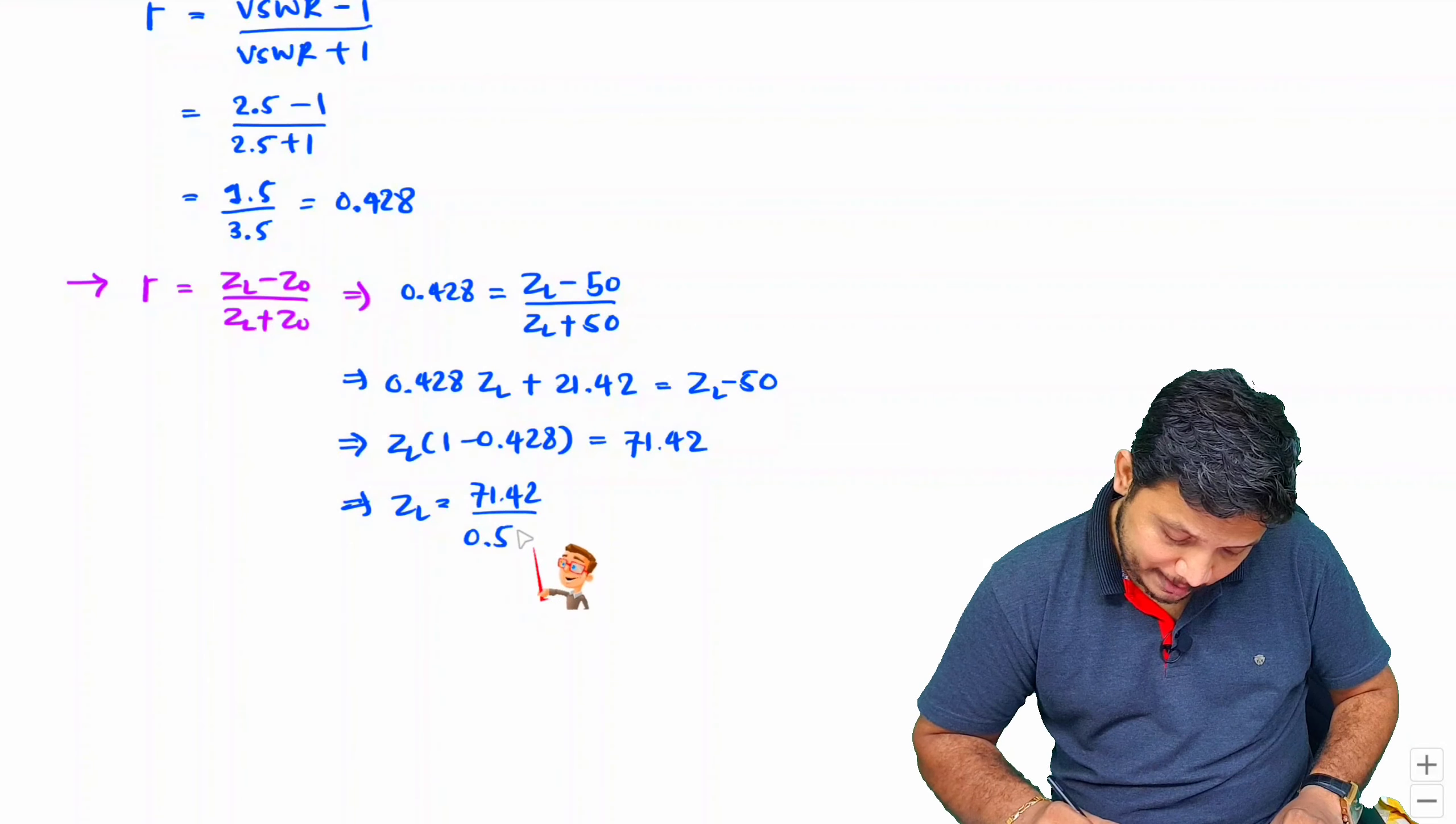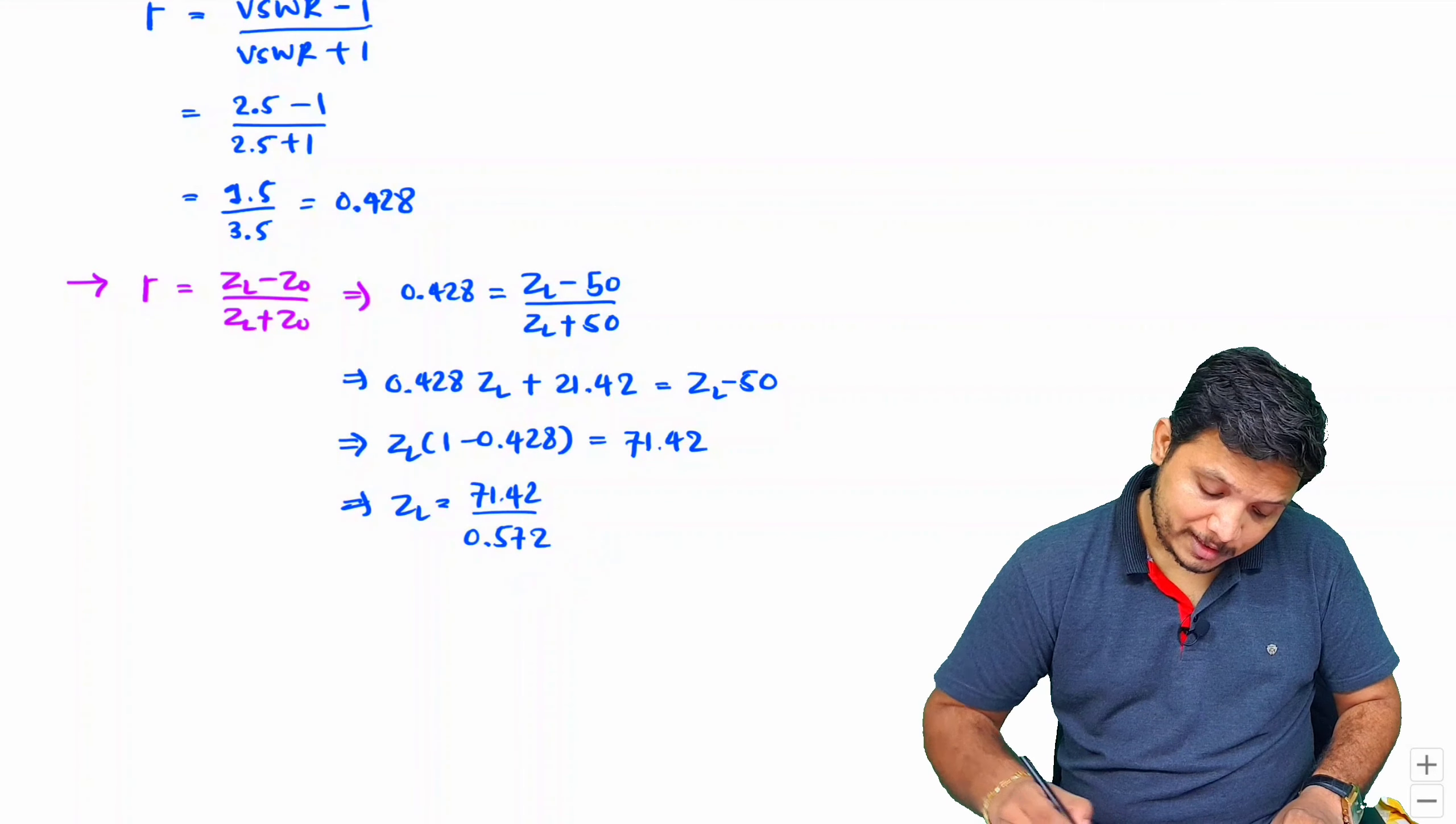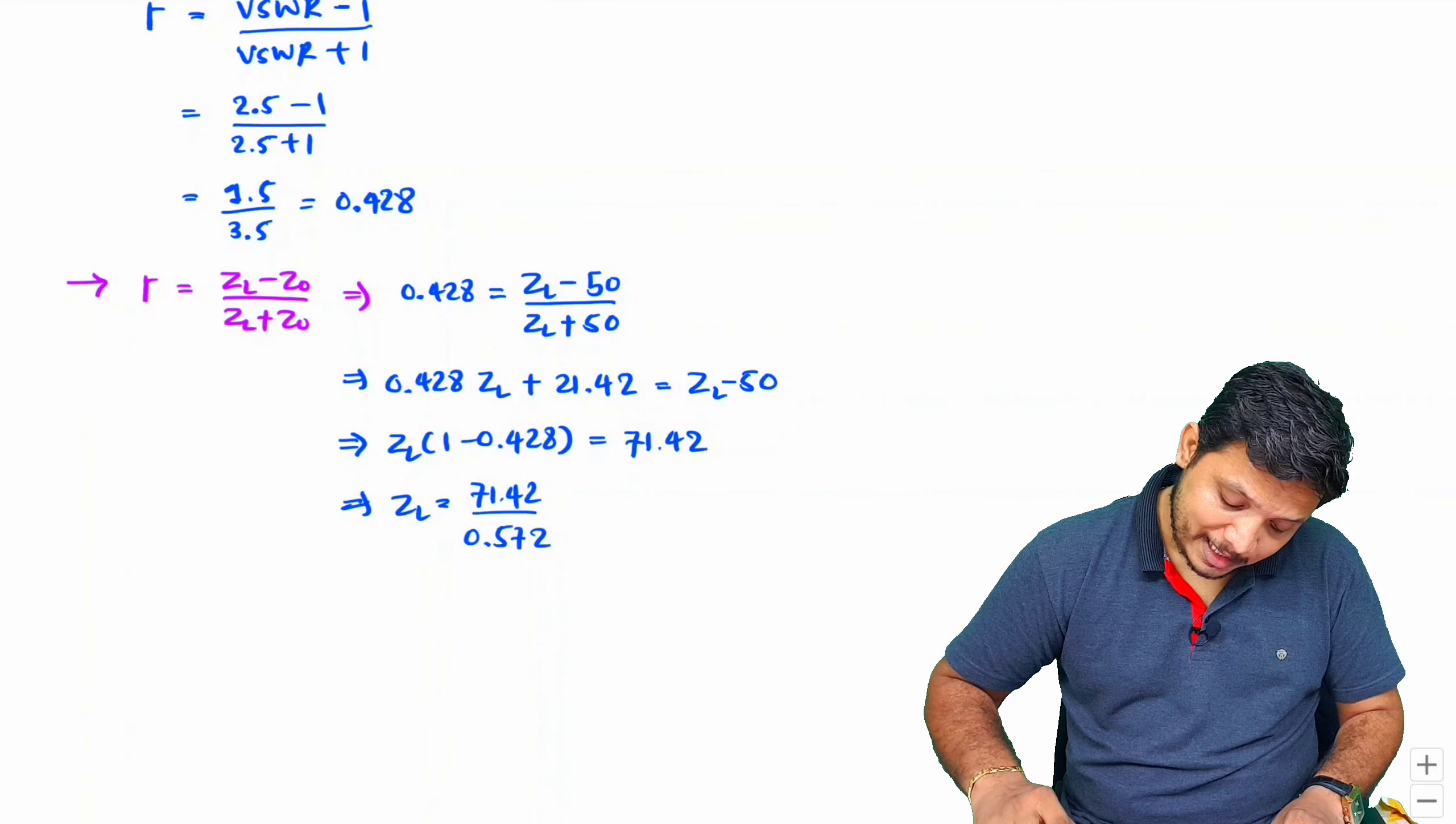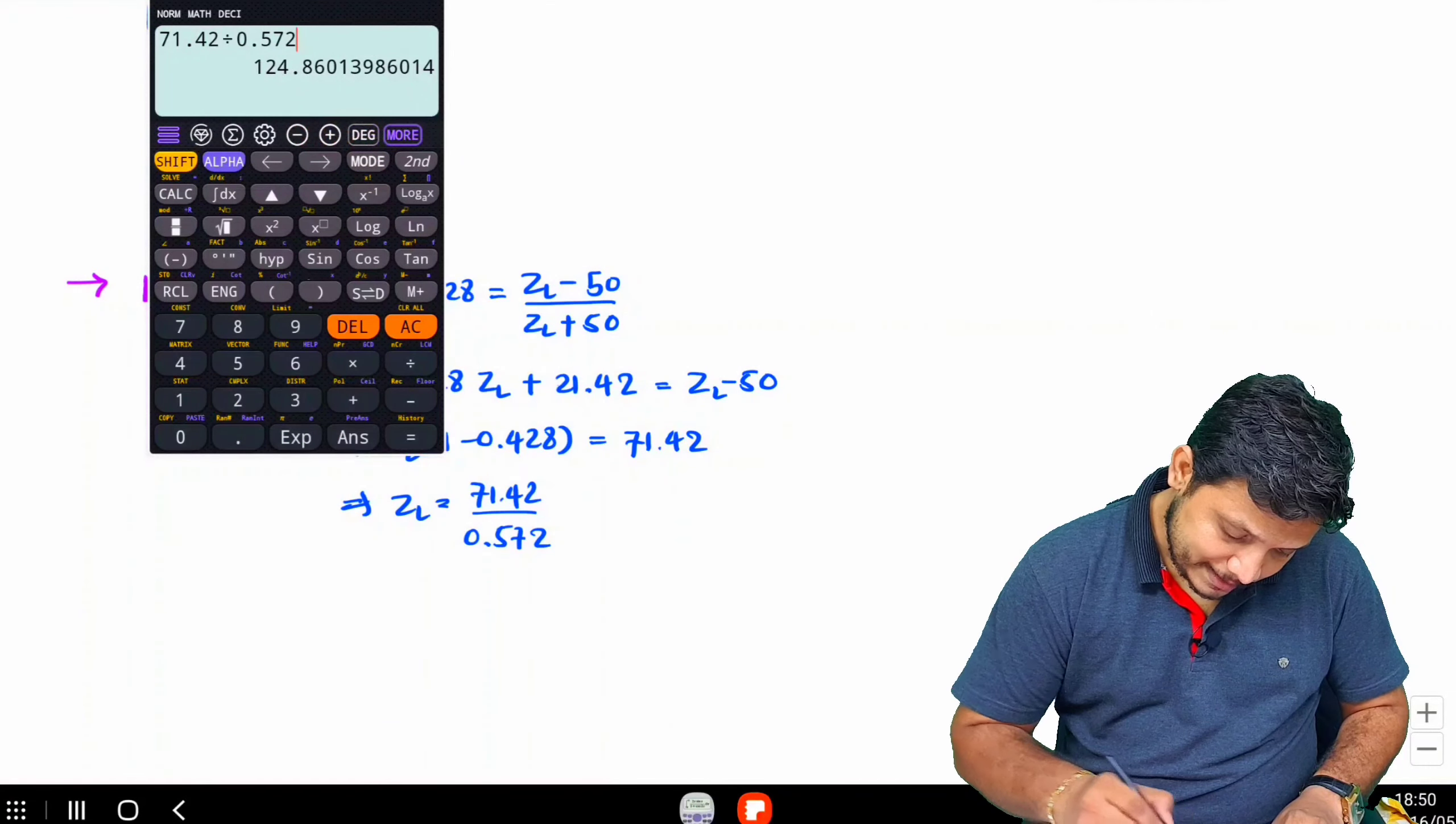ZL is 71.42 divided by 1 minus this, which is 0.572. If you do this calculation, you'll have ZL equal to 124.86.